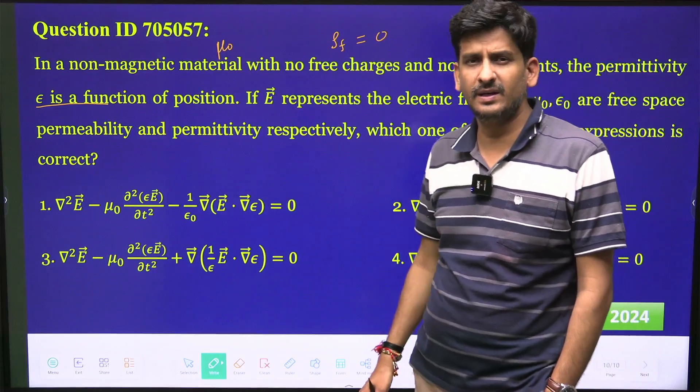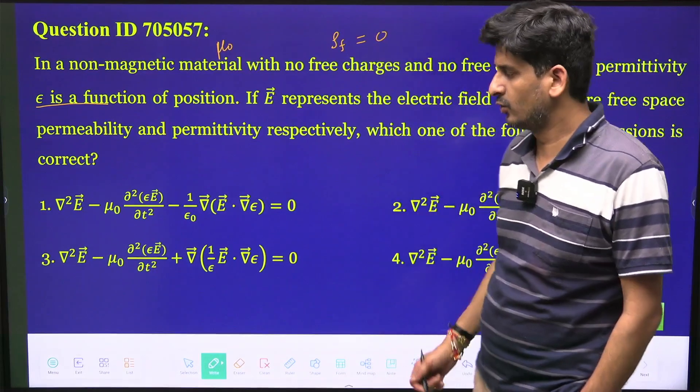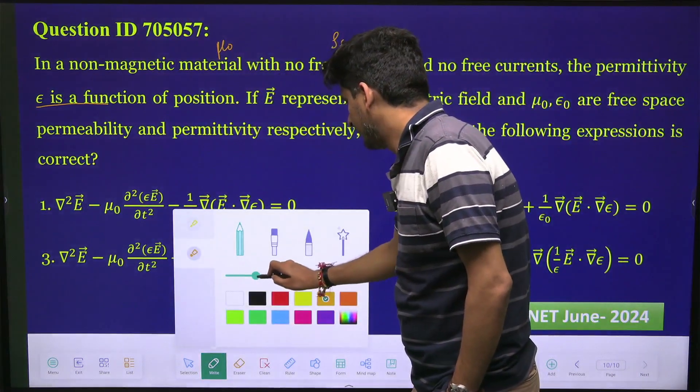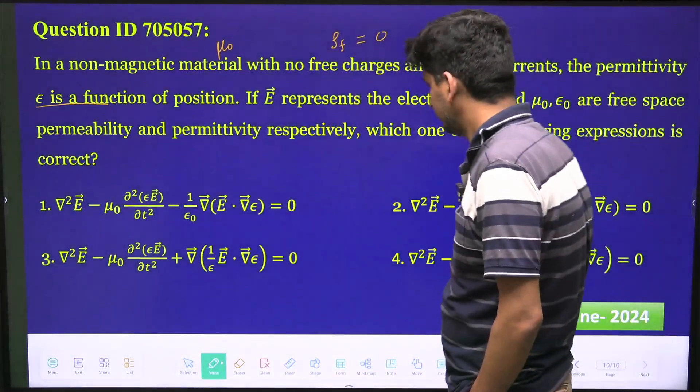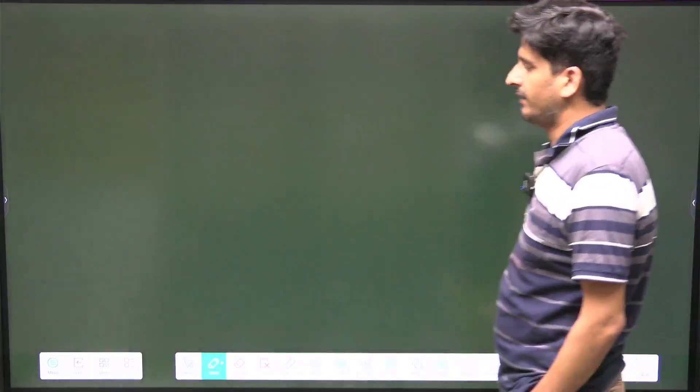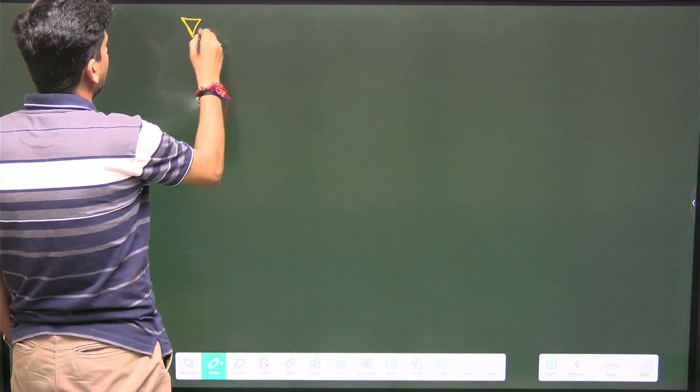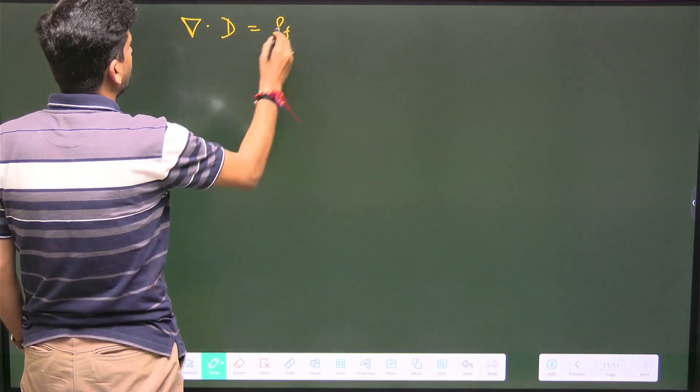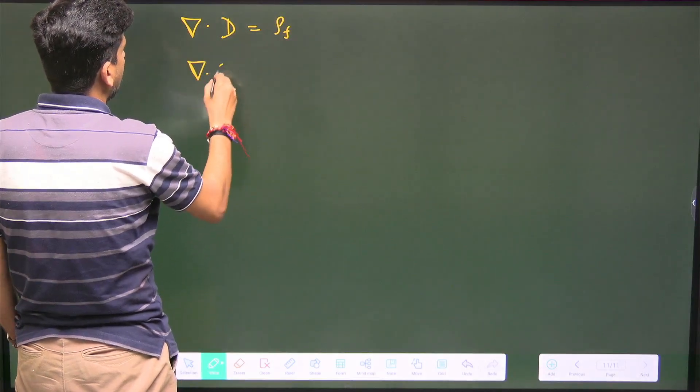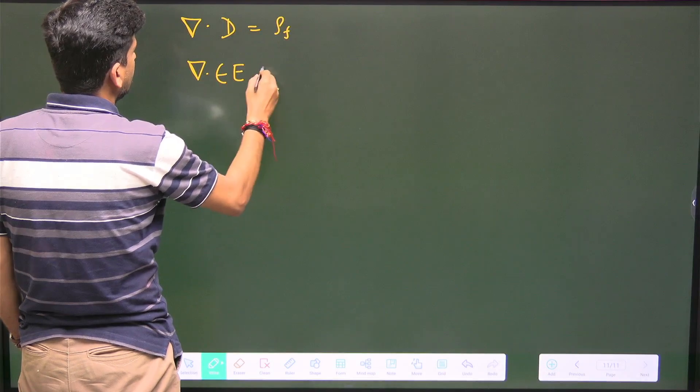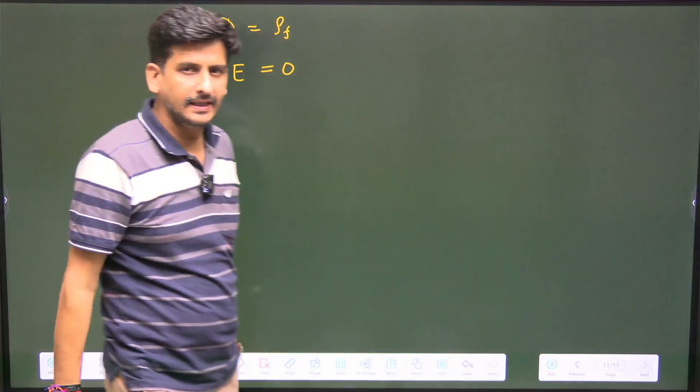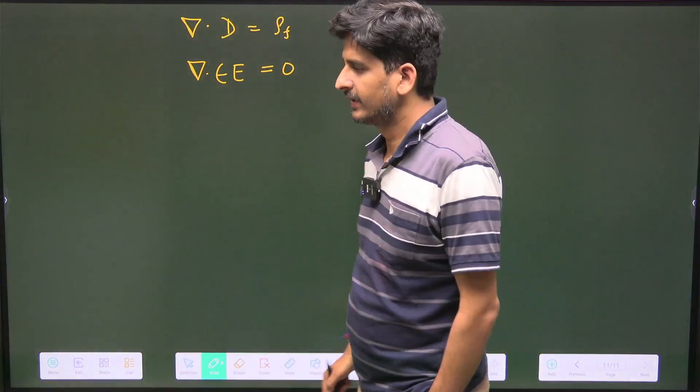If you see the expression, they are trying to write del square, which comes when we club two Maxwell's equations. Let's see how we can do it. So if I write Maxwell's equations: free charge is zero, so I will write del dot B is equal to ρf, so del dot εE is equal to zero.